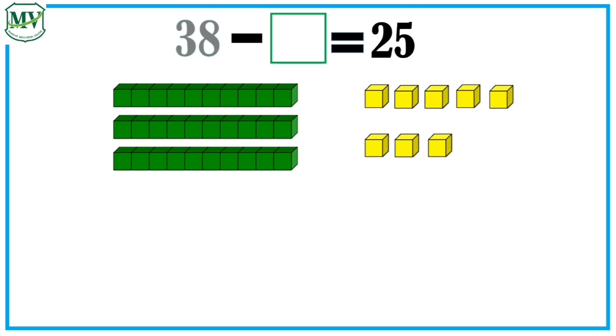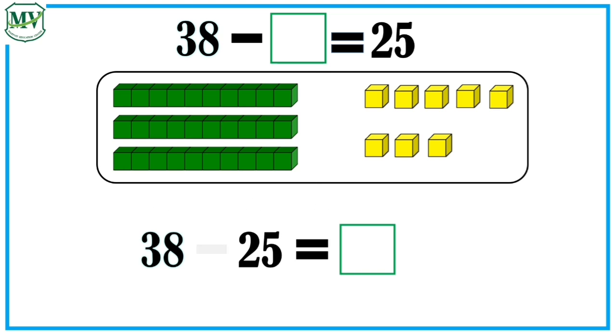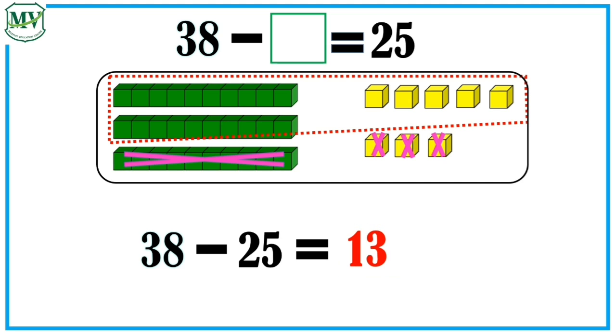The number sentence is 38 minus blank equals 25. What should we do? That's right! Subtract 25 from 38. So, 38 minus 25 is equal to? That's right! It's 13! Good job, kids!